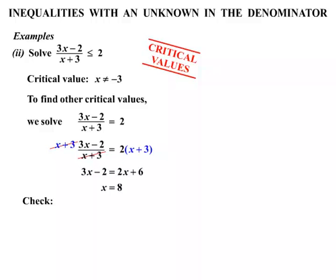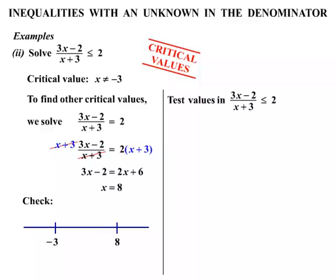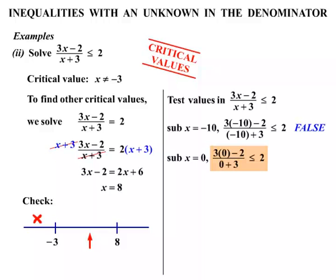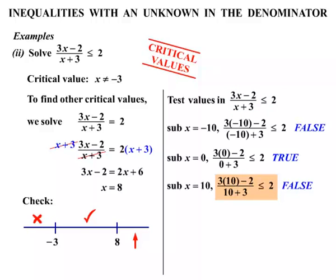Now let's check the values on a number line, marking in minus 3 and 8. We pick a number to the left of minus 3 — say x equals minus 10. Substituting gives a false statement. Between minus 3 and 8, the easiest value is x equals 0; substituting gives a true statement, so we give that a tick. Finally substituting x equals 10 gives a false statement.